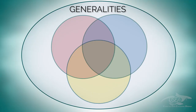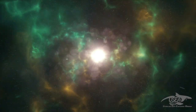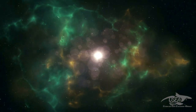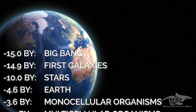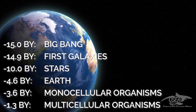First of all, some generalities about the evolution of Earth. Everything started with the Big Bang almost 15 billion years ago. The first galaxy occurred 100 million years later. Then the stars, and planet Earth, started to form about 4.6 billion years ago.